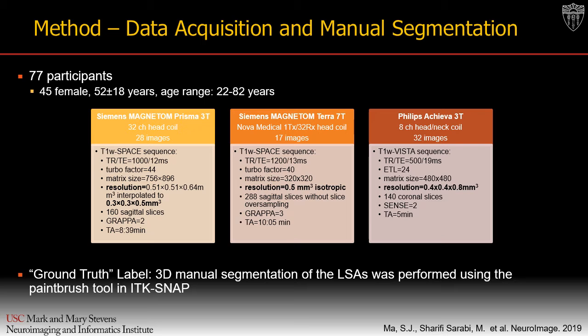In order to create a ground truth label for a deep learning model, manual segmentation of the LSAs was required. The LSAs were carefully segmented manually in the black blood images by experienced and trained radiologists using the paintbrush tool in ITK-SNAP.